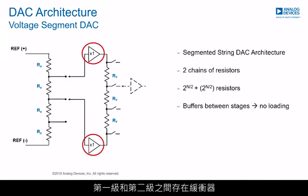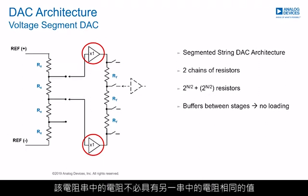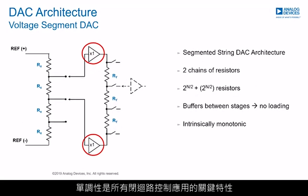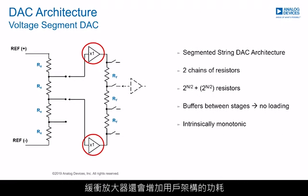Since there are buffers between the first and second stages, the second DAC string does not load the first and the resistors in this string do not need to have the same value. Resistor string DAC implementations are inherently monotonic by design and are characterized by simplicity, density, and low power consumption. Monotonicity is a key specification for all closed-loop control applications. However, buffering the main and substring has the potential to introduce linearity errors due to the buffer amplifiers, and also introduces area and power penalties.